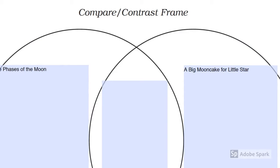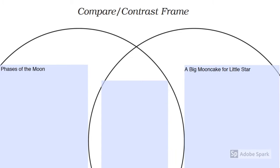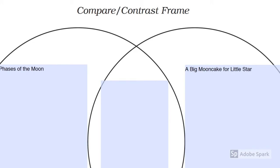A great extension activity for this book would be to compare it with another book about the moon. In this case, we're going to compare A Big Moon Cake for Little Star with Suzanne Slade's The Phases of the Moon, starting with a Venn diagram.